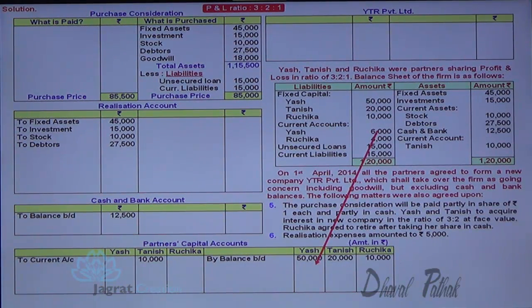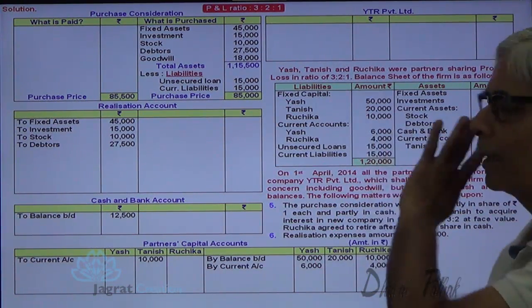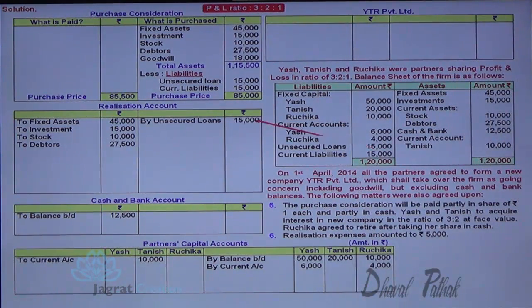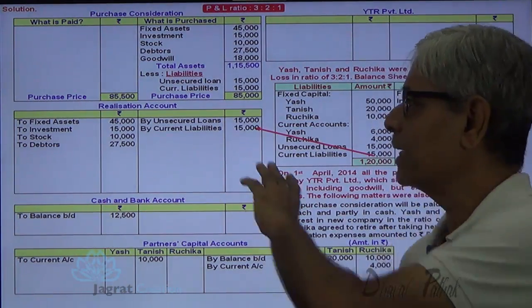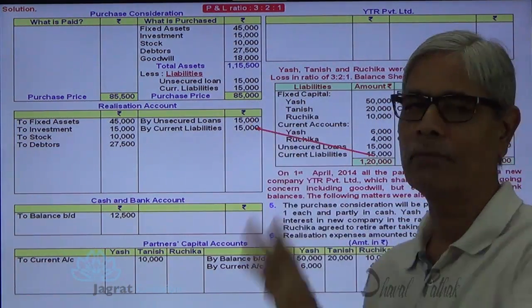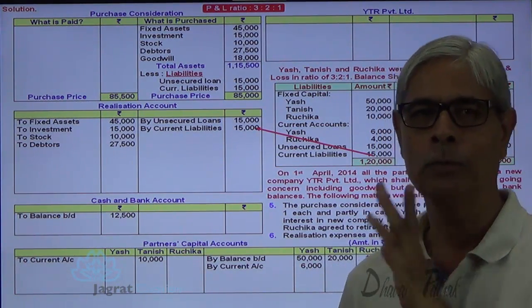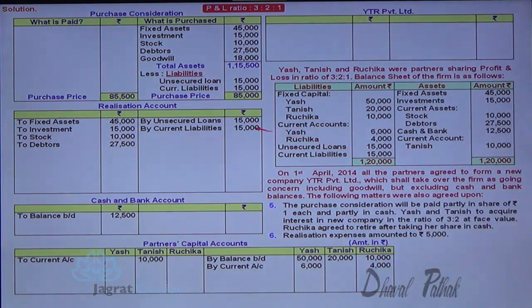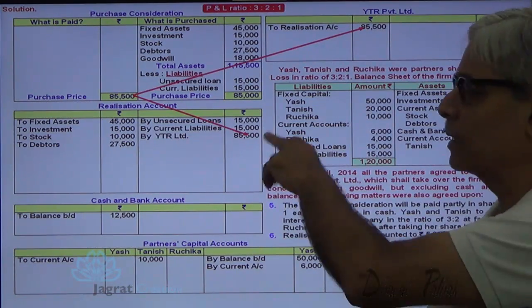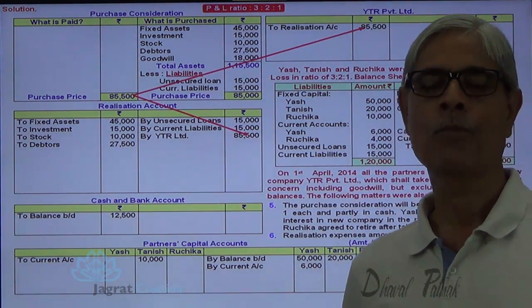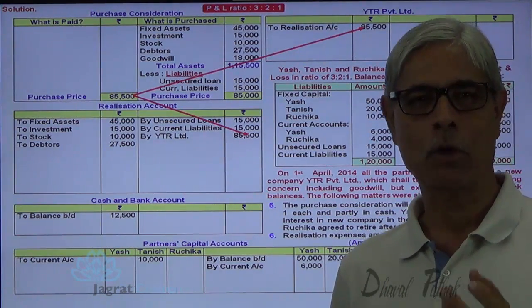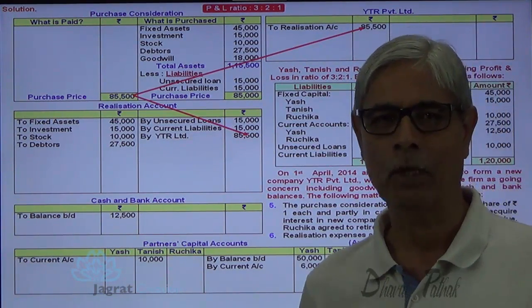The liabilities are credited to the realization account. This is how the balance sheet is copied. After recording all this, the entire business is sold at a price of 85,500 — so purchase consideration due from YTR Limited is 85,500. YTR Limited account is debited to the realization account. We shall find out how much is received in cash and how much in equity shares after a couple of minutes.